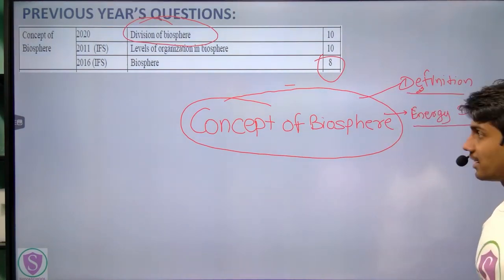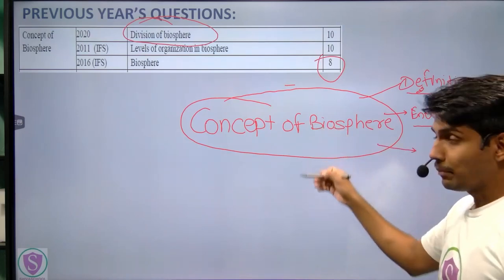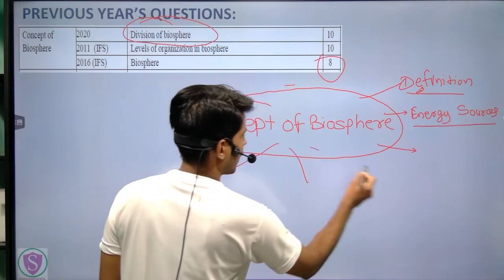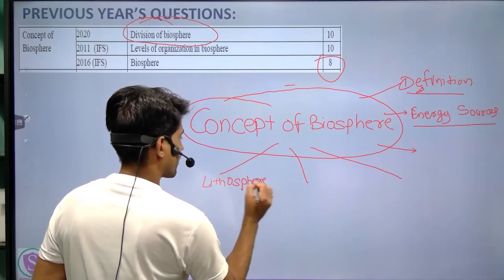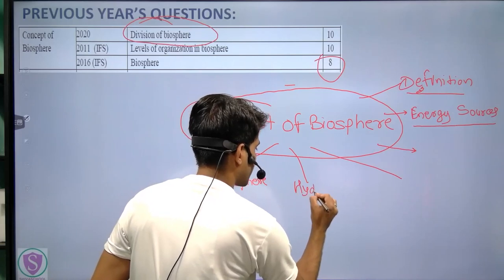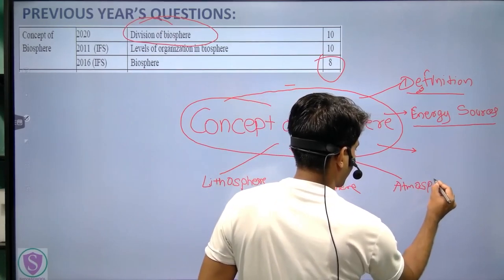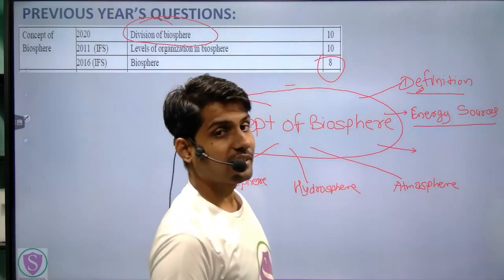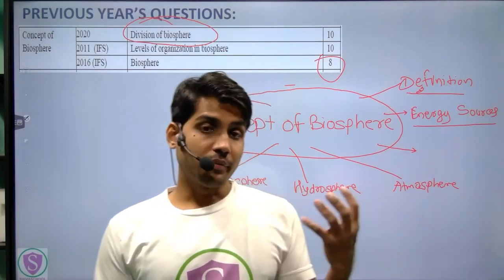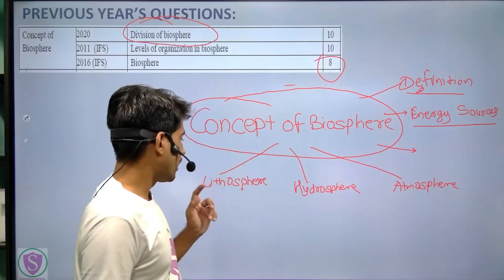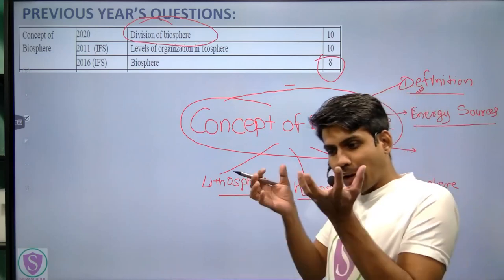We have seen the energy sources: the earth's heat and solar radiation. We also saw the types and divisions of the biosphere — how we divided it into the lithosphere, hydrosphere, and atmosphere. But the task does not end here because the division of the biosphere does not consider only these three spheres but also the biotic life forms which are present in all of these spheres. That biotic component we have not yet studied.